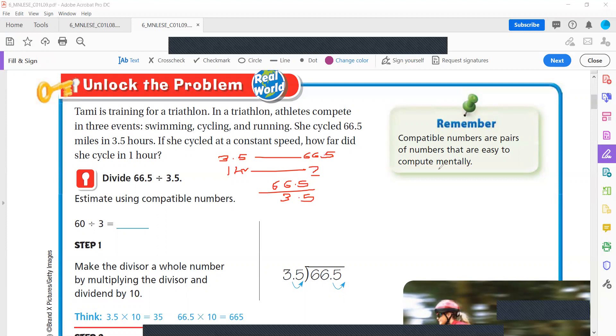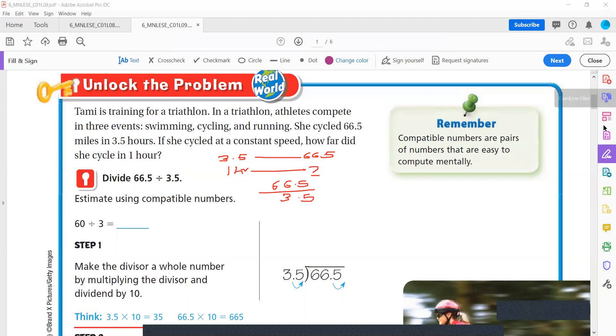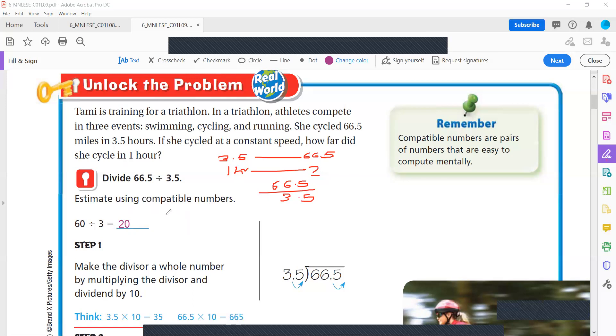3.5 hours, she cycle for 66.5 miles. So, for one hour, how much? One hour, you don't know. So, of course, you need to divide 66.5 divided by 3.5. 3.5 hours, 66.5 miles. So, one hour, how many miles? You need to divide it. Now, first simple, when I find estimate, 60 divided by 3. 60 divided by 3. It will be 20.